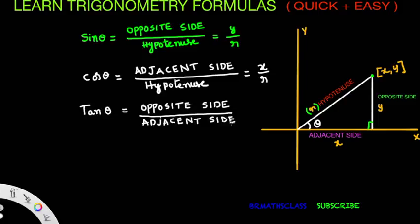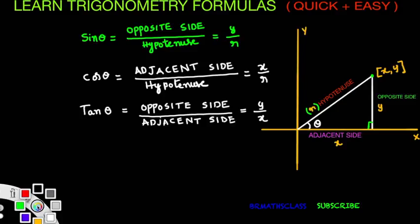Tan theta: tan theta definition is opposite side divided by adjacent side. Opposite side is Y and adjacent side is X, so tan theta equals Y by X. It is important — you must learn these three formulas. There is no shortcut to remember them. Once you learn these three formulas, we have a trick to learn the remaining three.